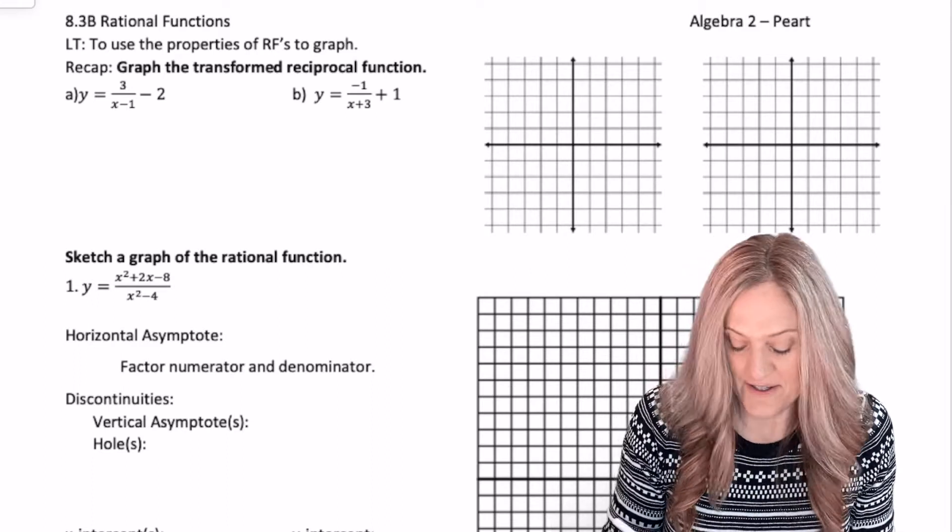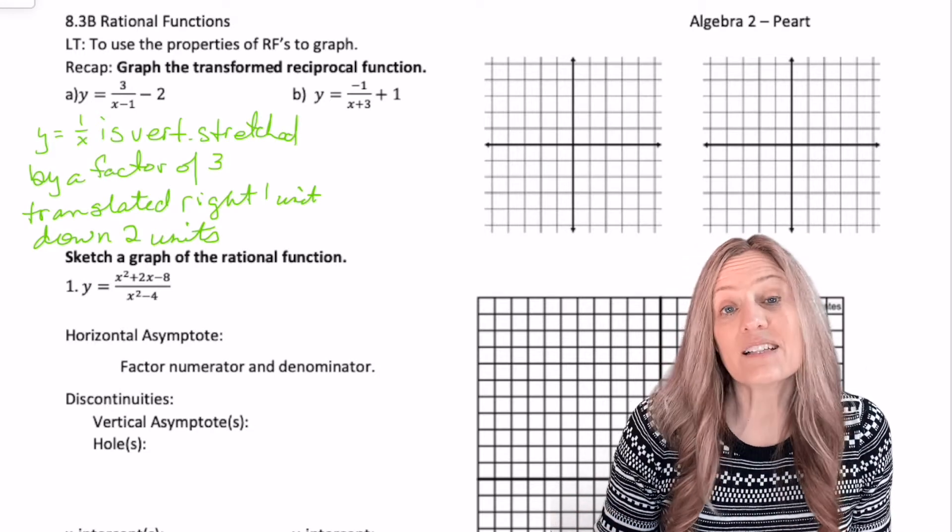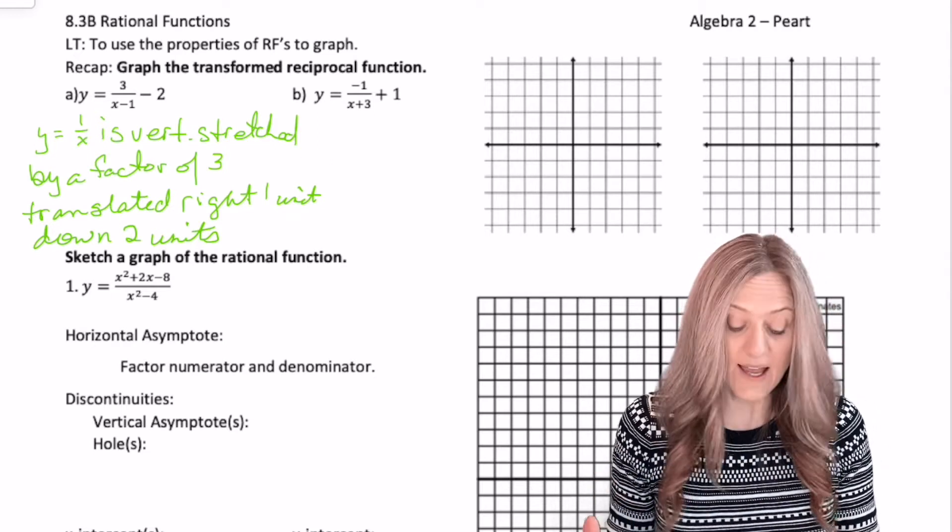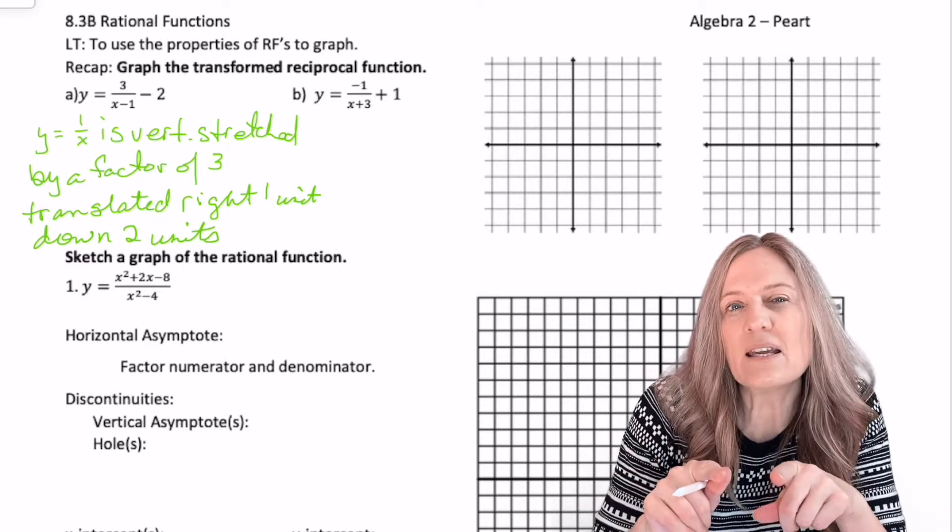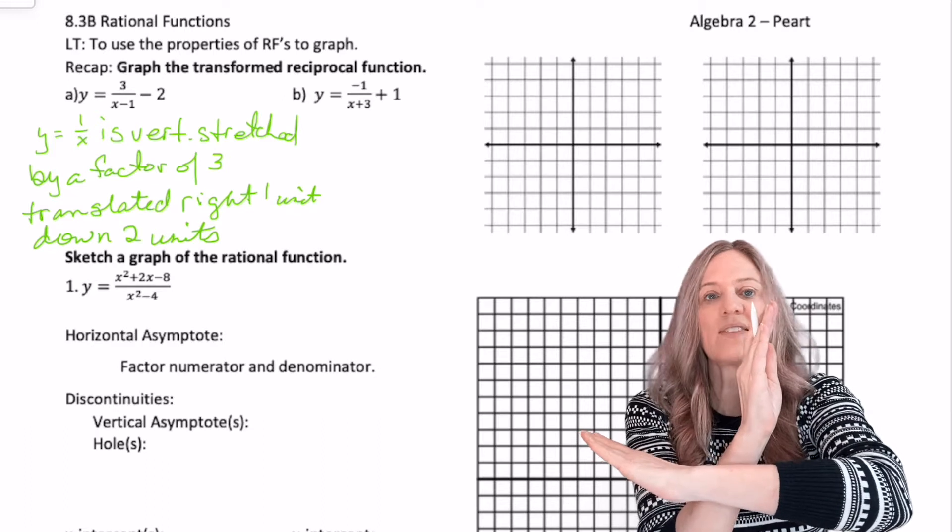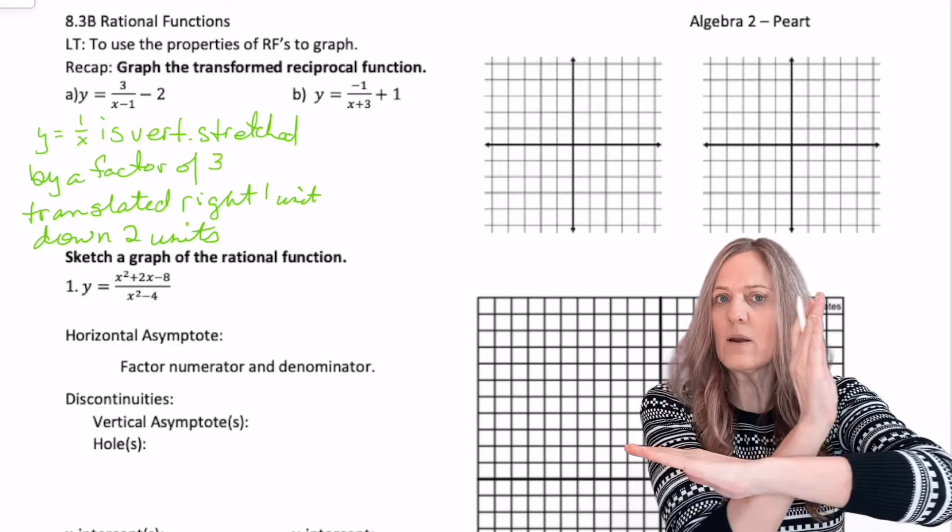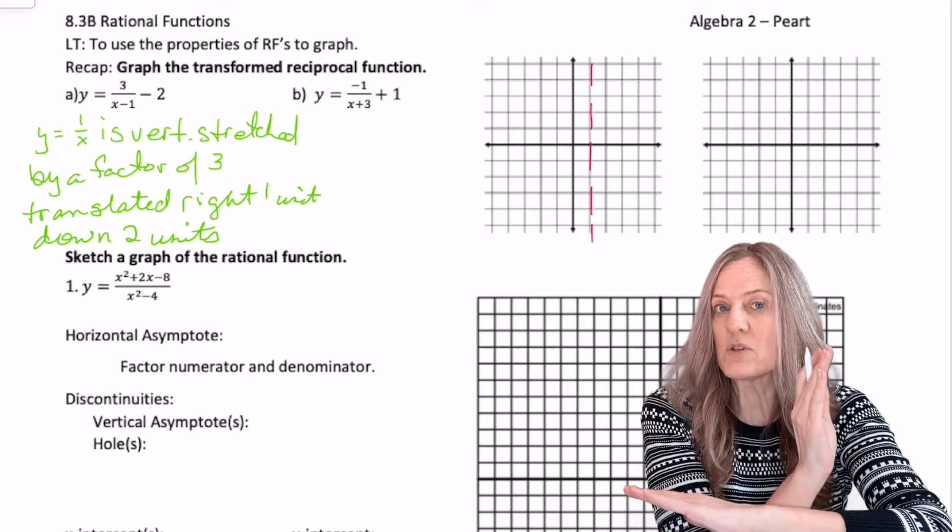Let's write our transformations. Our parent function, y equals one divided by x, is vertically stretched by a factor of three and translated to the right one unit and down two units. So let's go ahead. Remember how we did these? We start with our asymptotes. Our asymptotes are normally at the x-axis and the y-axis, but we've been translated right one unit and down two. So let's sketch the asymptotes first.